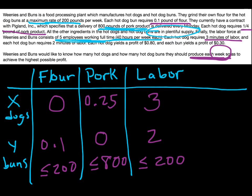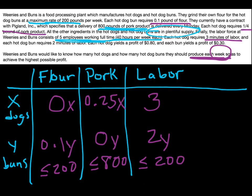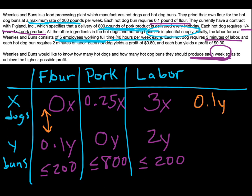Now we just need to actually write the inequalities. We'll look vertically in each of these columns. Since we're going to be producing more than one hot dog and more than one hot dog bun, all of these different amounts would be multiplied by however many hot dogs or buns you're producing. Each hot dog bun needs 0.1 pounds of flour, but we need to multiply that by however many buns are being produced. I'll skip the 0x since that cancels out. So for flour, that constraint is: 0.1y is less than or equal to 200.